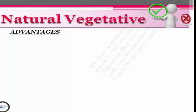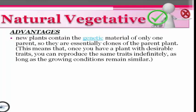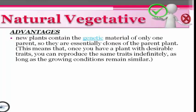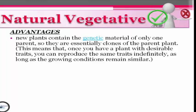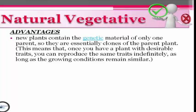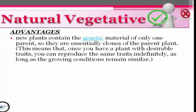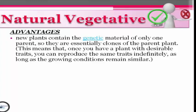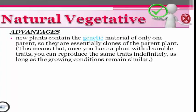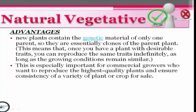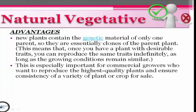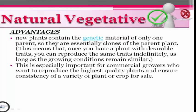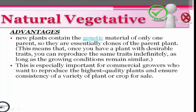Natural vegetative propagation advantages. First, new plants contain the genetic material of only one parent, so they are essentially clones of the parent plant. This means that once you have a plant with desirable traits, you can reproduce the same traits indefinitely as long as the growing conditions remain similar. This is especially important for commercial growers who want to reproduce the highest quality plants and ensure consistency of a variety of plants or crops for sale.